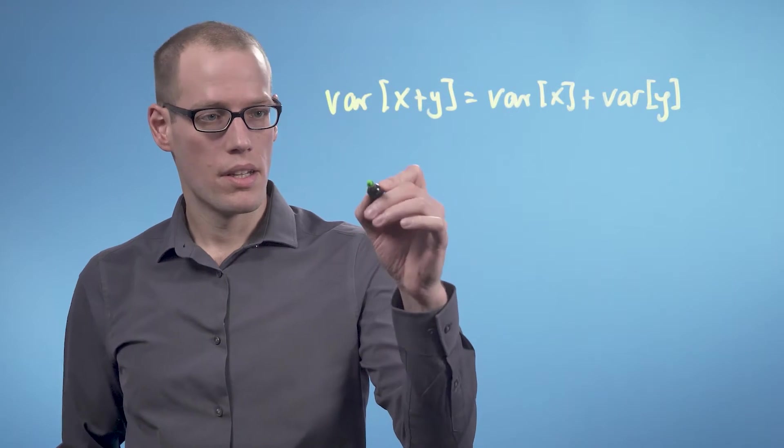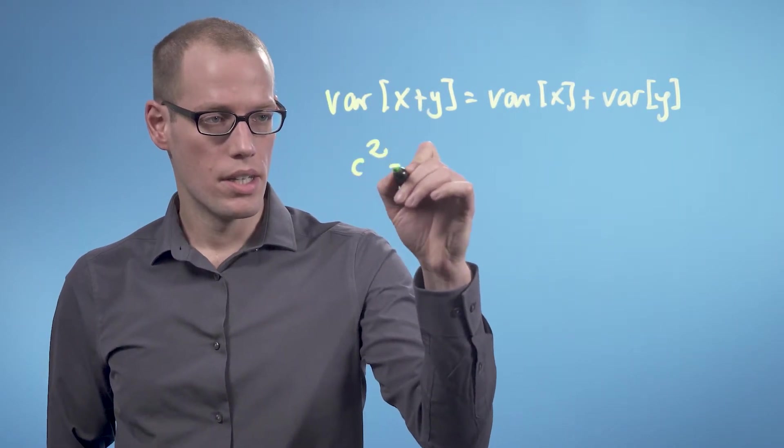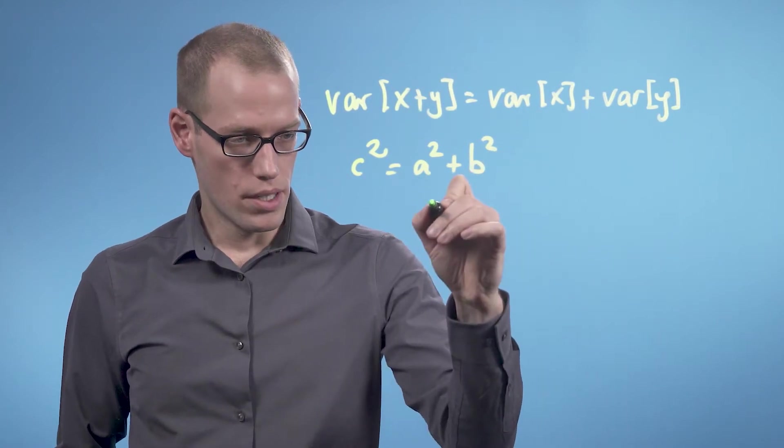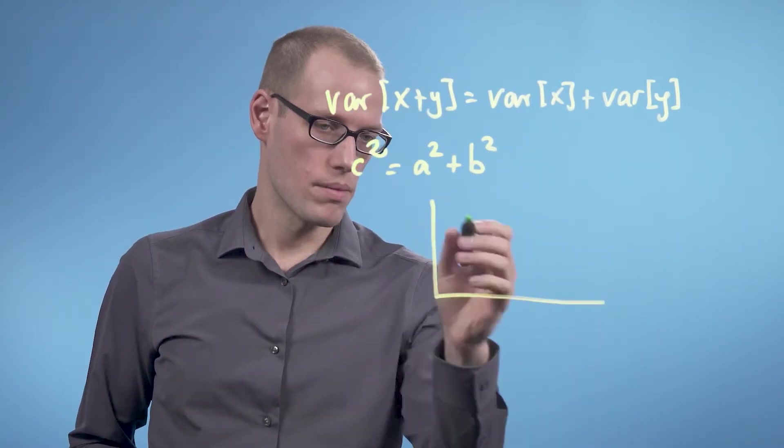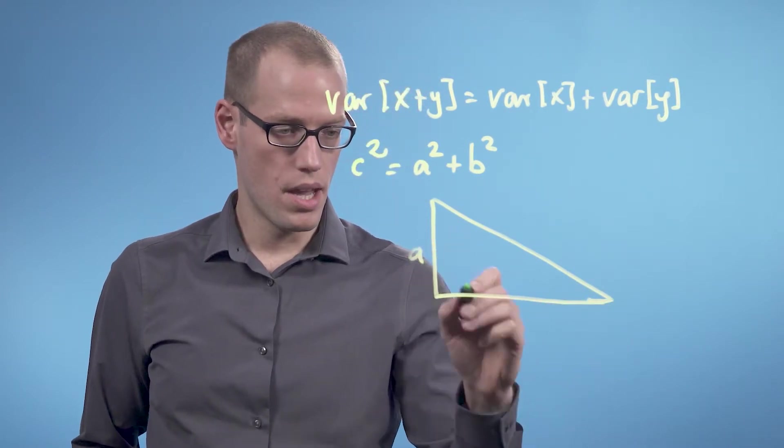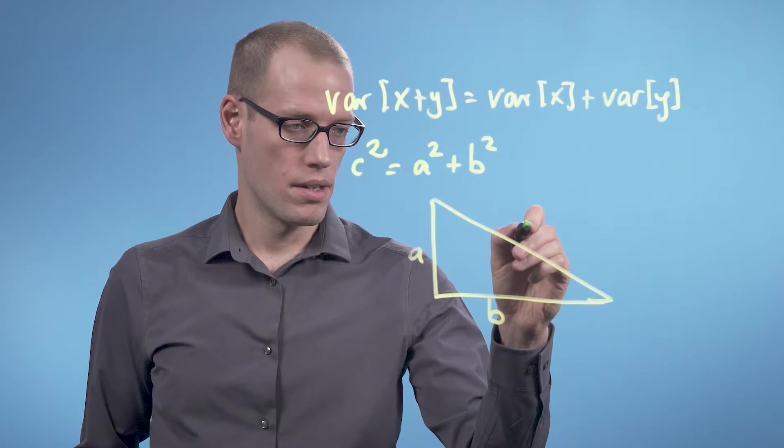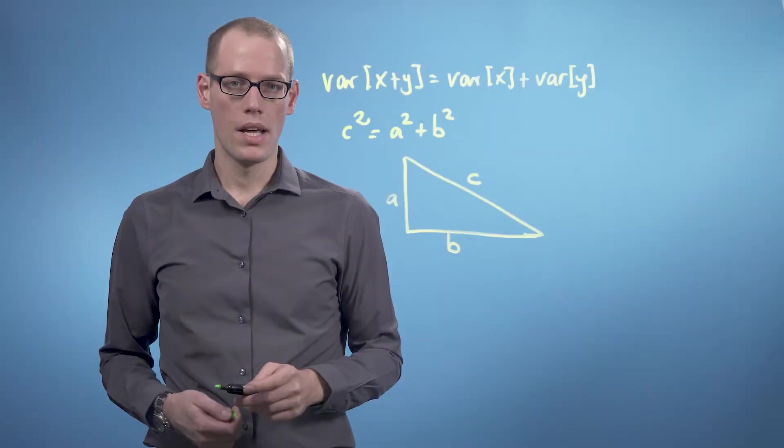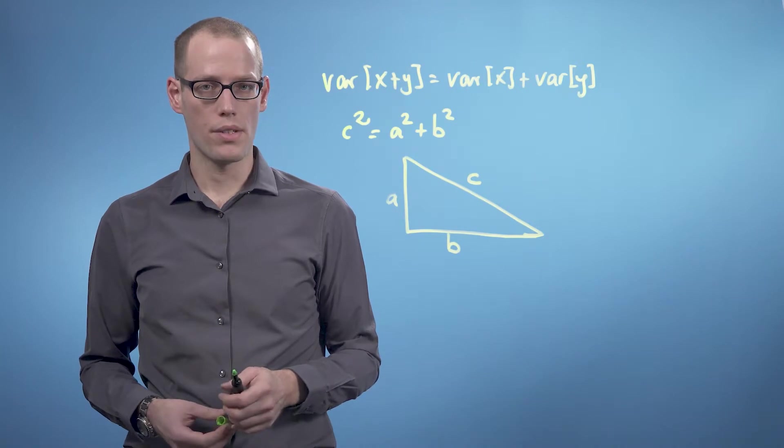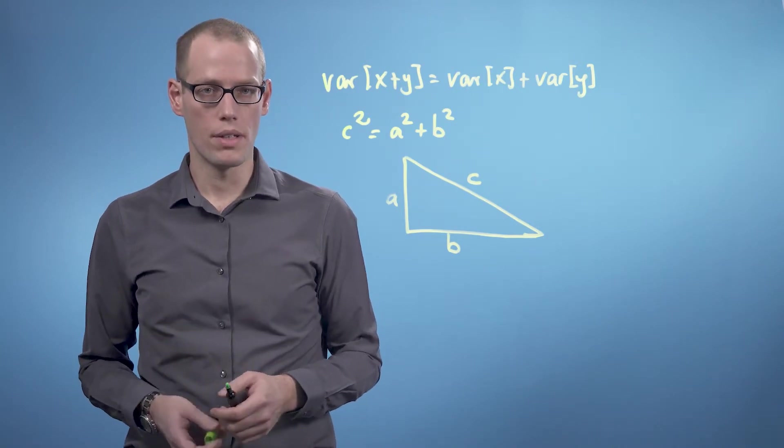That one states that c² = a² + b². If we look at triangles of this form, where this is a, b, and this is c.